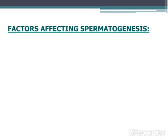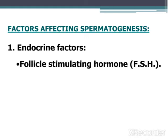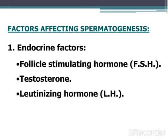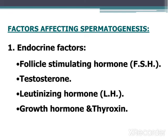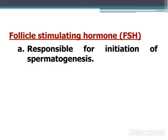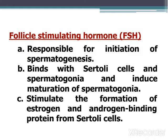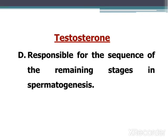Factors affecting spermatogenesis: the first factor is the endocrine factor. Multiple hormones affect spermatogenesis, including follicle-stimulating hormone (FSH), testosterone, luteinizing hormone (LH), and general hormones like growth hormone and thyroxine. FSH is essential for initiation of spermatogenesis; it binds with the Sertoli cells and spermatogonia and induces maturation of spermatogonia, and stimulates the formation of estrogen and androgen-binding protein from Sertoli cells. It is also responsible for the remaining stages in spermatogenesis.